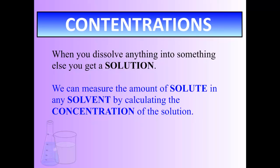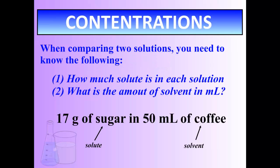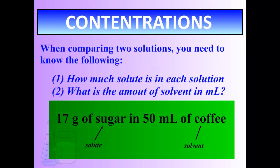When you start to dissolve something, like sugar into coffee, you start to get something called a solution. And we can measure the amount of solute in any solvent by calculating the concentration of the solution. Concentration is defined as the amount of solute dissolved in a given amount of liquid or solvent. And we write concentration like this, 17 grams of solute in 50 mils of solvent.